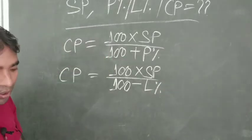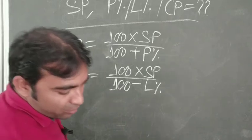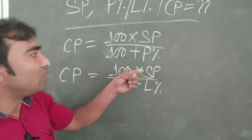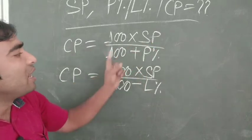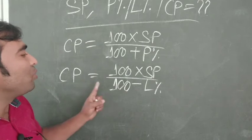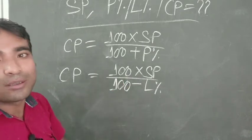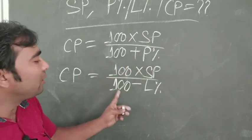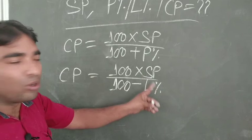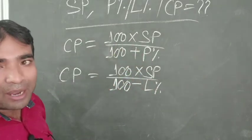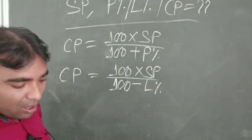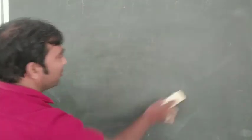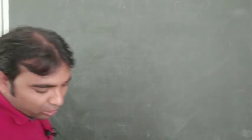I will show you with one example. Remember the formula: CP equals 100 into SP divided by 100 plus profit percentage, and CP equals 100 into SP divided by 100 minus loss percentage. In case of profit we use plus, and in case of loss we use minus. Now we will find out CP with an example.